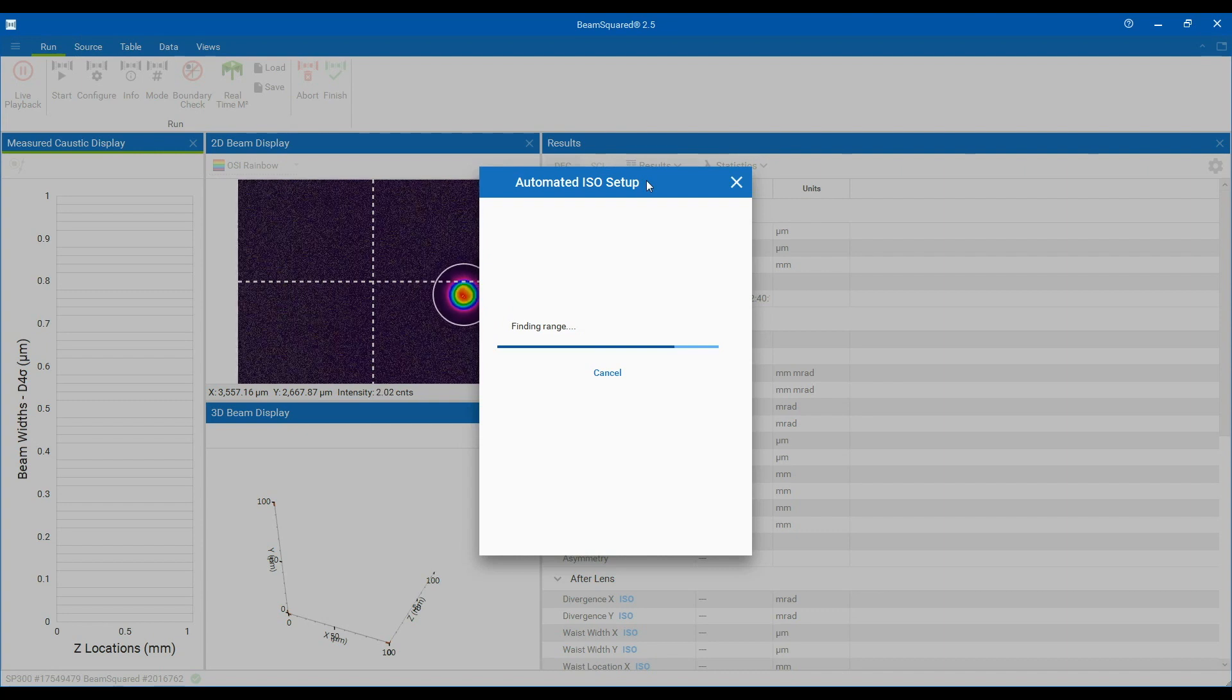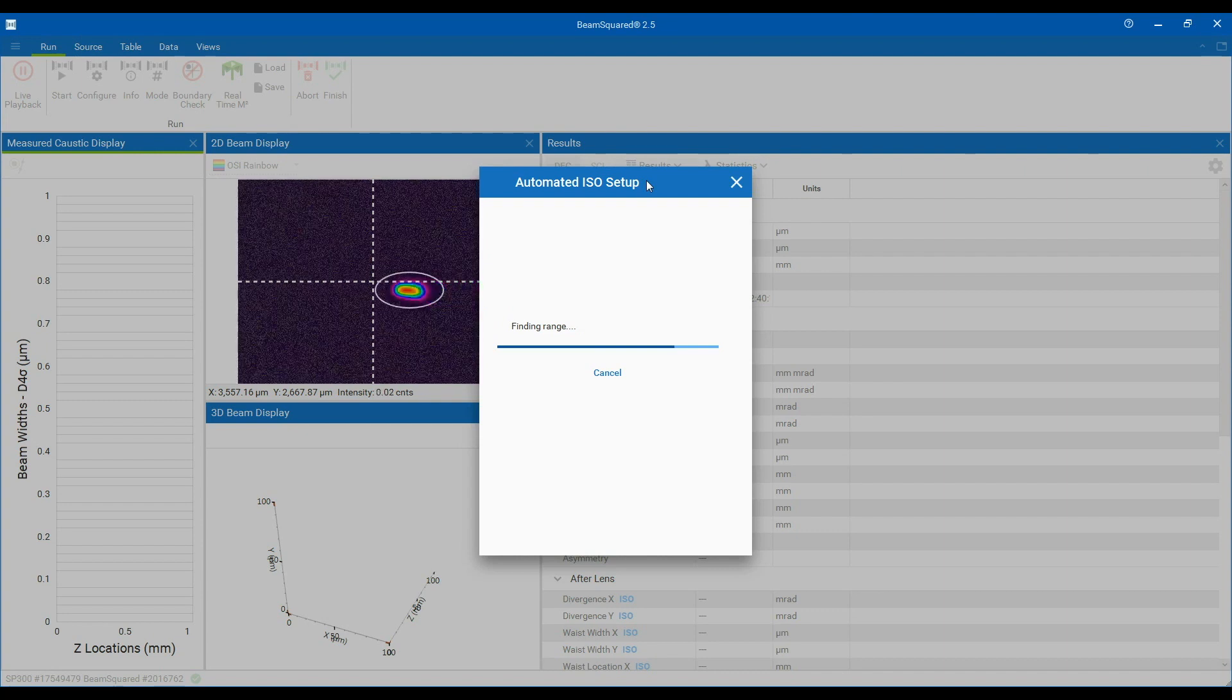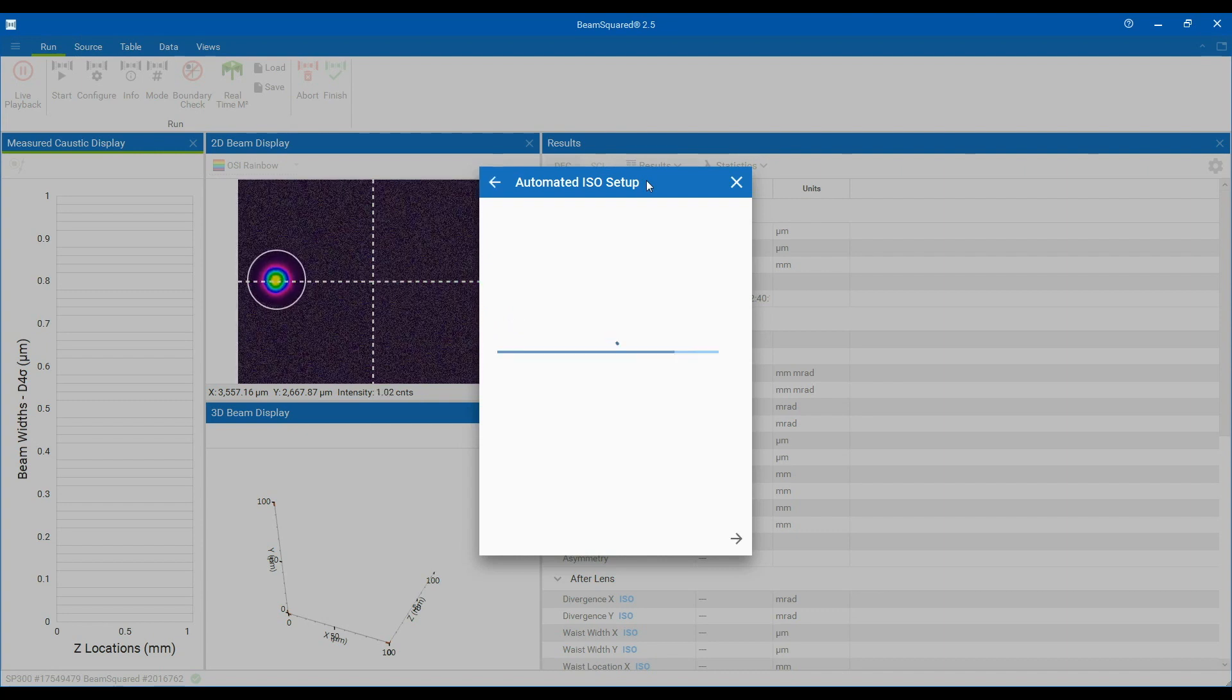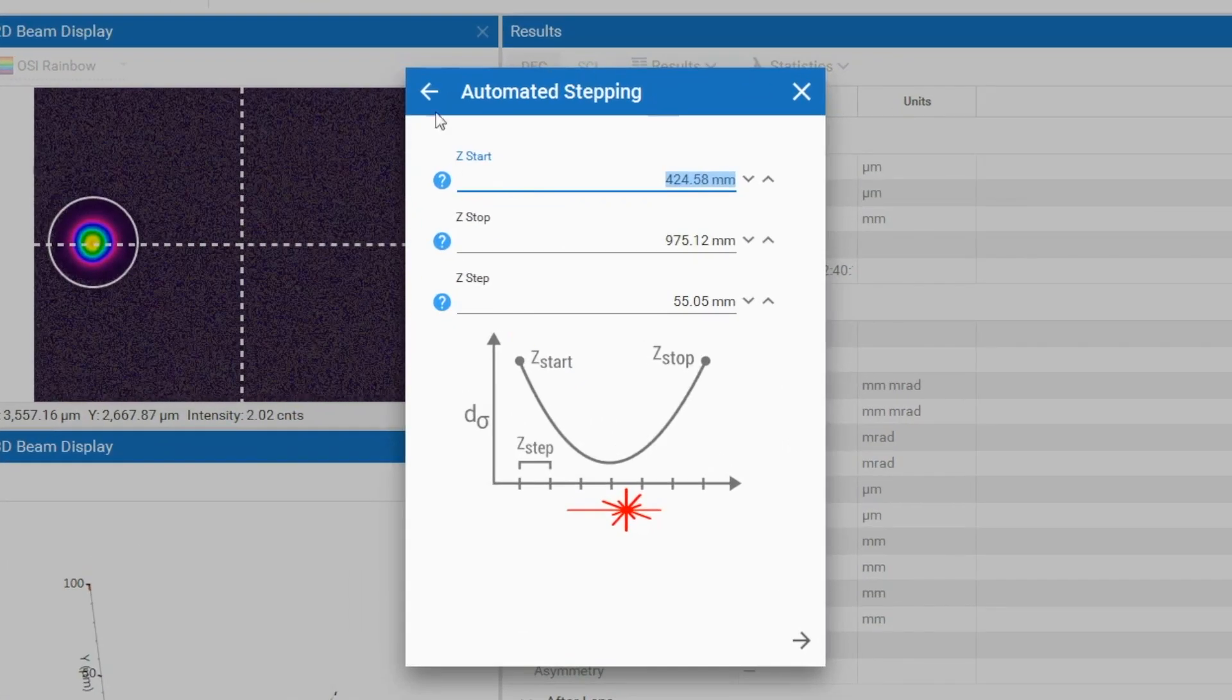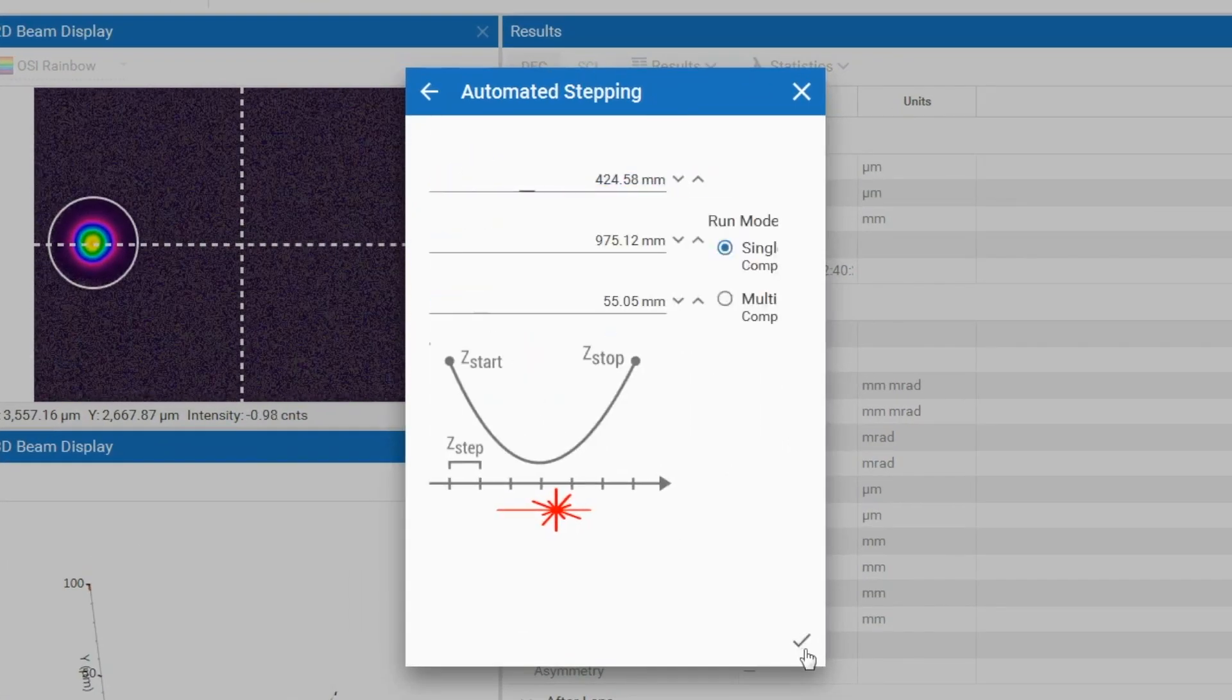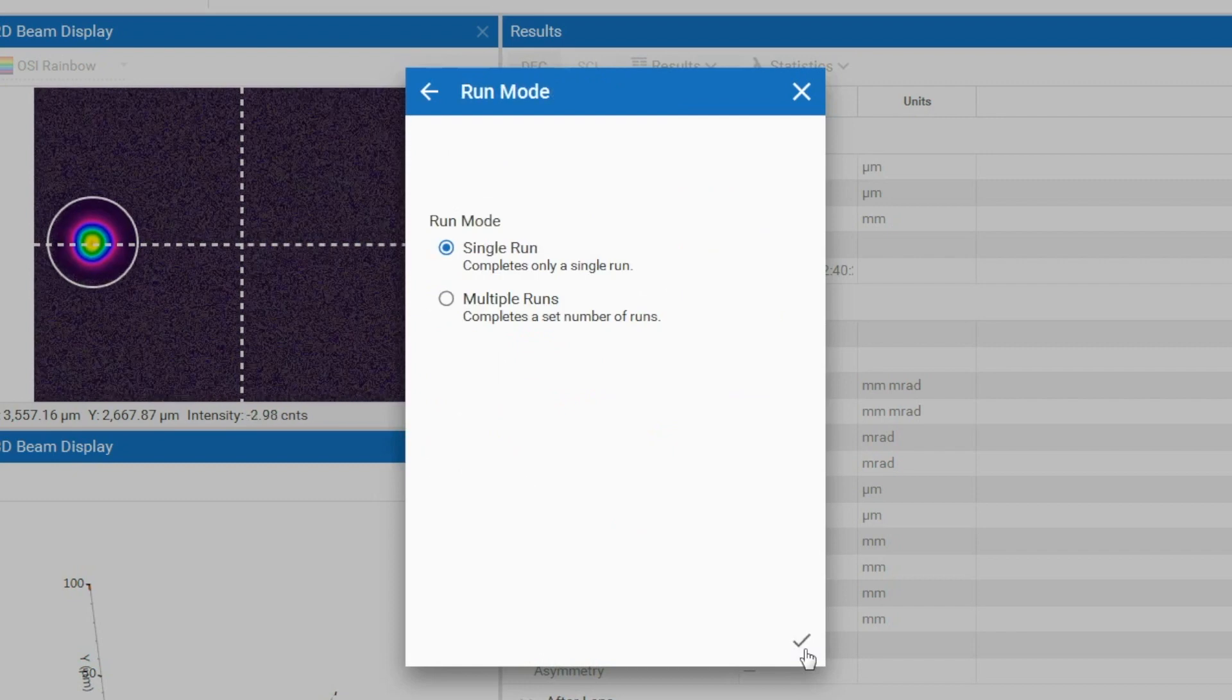If the automated ISO setup is unable to construct an ISO compliant beam propagation measurement, the application will go into automated stepping mode. The automated stepping mode only requires a start and stop location and a step size.